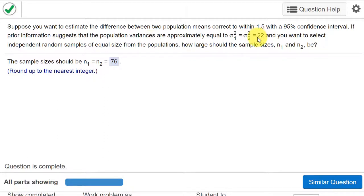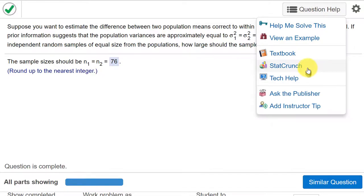So first thing to do is get the square root of 22 and you can use your calculator there and that is 4.7. I find it better to round to tenths on these questions. Then we'll go to question help and open StatCrunch.